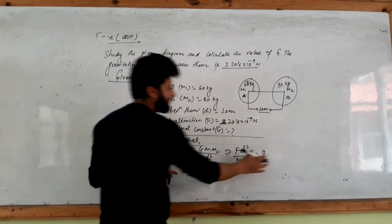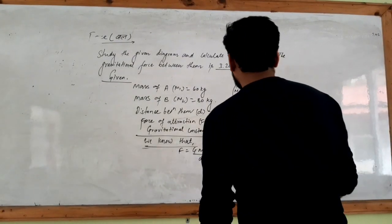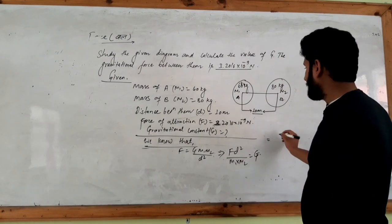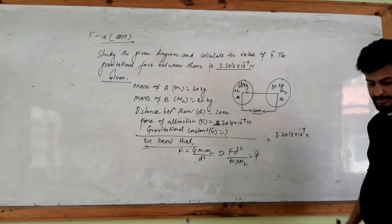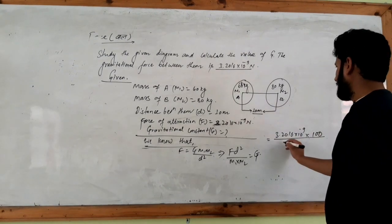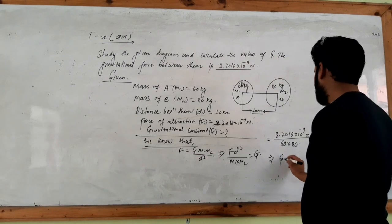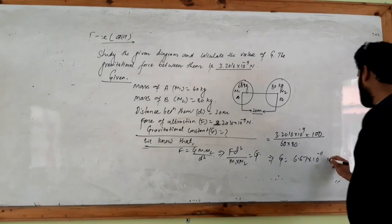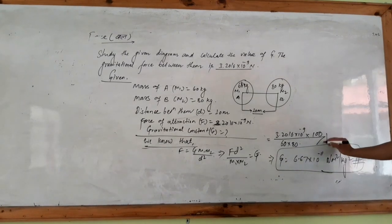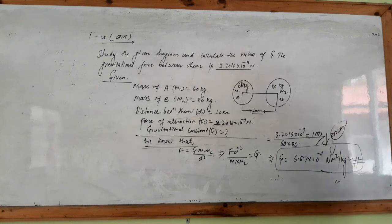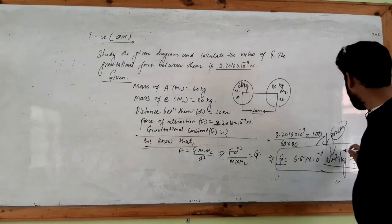So G equals to F times d squared upon M1 into M2. Substituting values: 3.2016 into 10 to the power minus 9 into d squared — that is 10 squared, which is 100 — over 60 into 80. This gives G equals to 6.67 into 10 to the power minus 11 Newton meter squared per kg squared. Don't forget to write the unit — you need to write the unit.